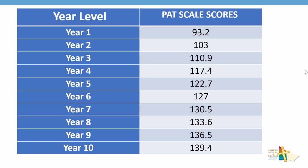Here are the actual scale scores from the PATMaths. These scale scores are for children at exactly the 50th percentile, or the average. If you look at the growth between year 1 and year 2, you can see that it's about 10 scale score points. However, when we get up to year 6 and 7 and beyond, the growth is only about 3 scale score points.